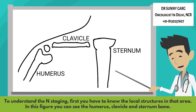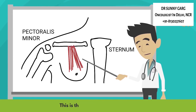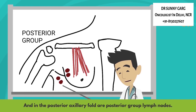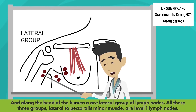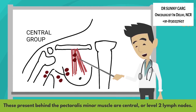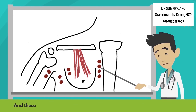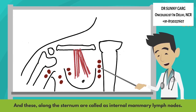Now we move on to N-staging. To understand N-staging, first you have to know the local structures in that area. In this figure you can see the humerus, clavicle, and sternum bones. This is the pectoralis minor muscle. The nodular structures in the anterior axillary fold are called the anterior group of lymph nodes. In the posterior axillary fold are the posterior group of lymph nodes, and along the head of the humerus are the lateral group of lymph nodes. All three groups lateral to the pectoralis minor muscle are level 1 lymph nodes. Those present behind the pectoralis minor muscle are central or level 2 lymph nodes. Those present medial to the pectoralis minor muscle are apical or level 3 lymph nodes. And those along the sternum are called internal mammary lymph nodes.